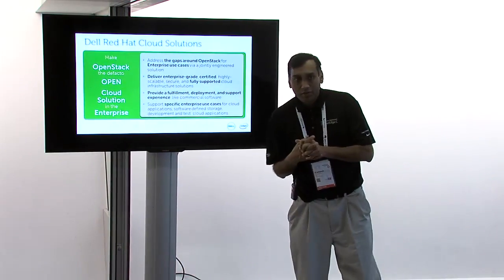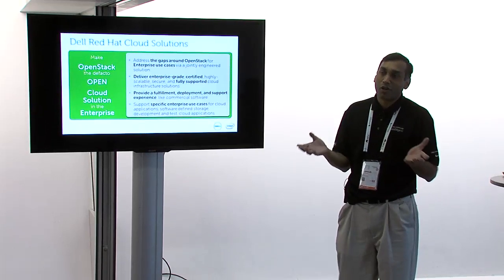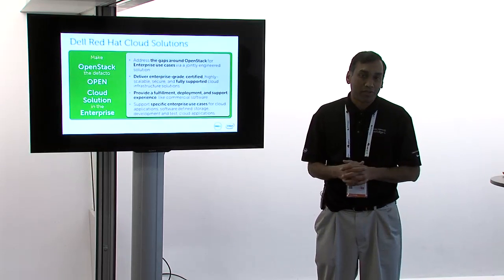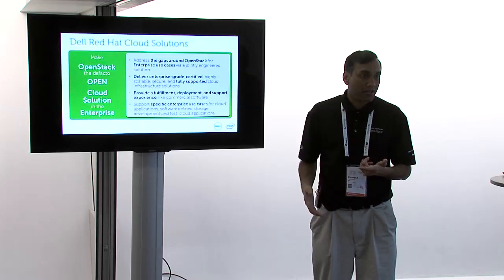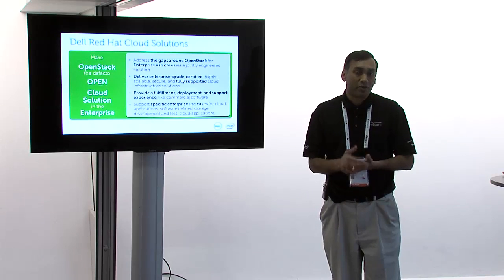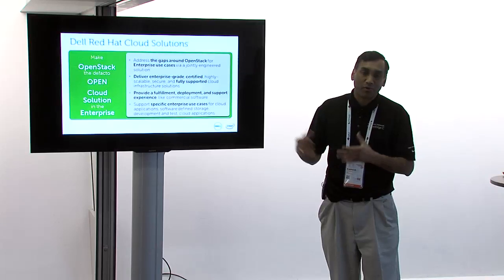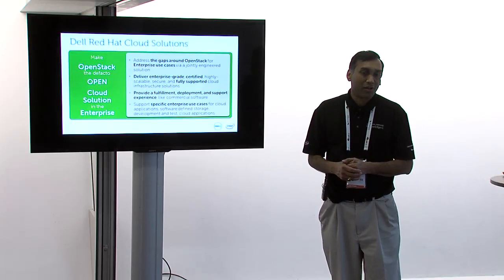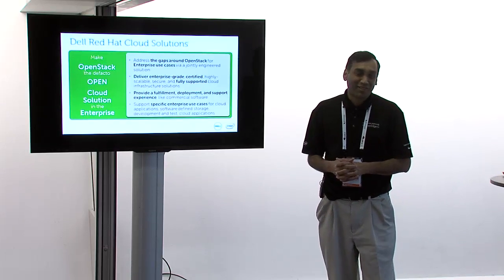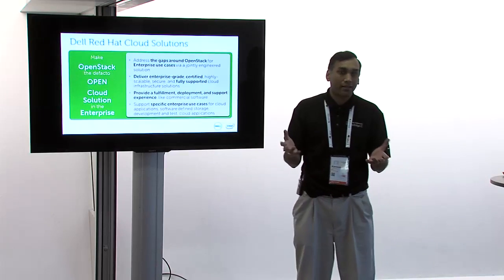Our focus is really to address the gaps. There are some pretty clear, obvious gaps with OpenStack — things like networking, upgrades, making it enterprise-ready for the mainstream enterprise. You can't just pull in the open source bits from Trunk and use them in production. That's a recipe for disaster. So we are working with Red Hat.